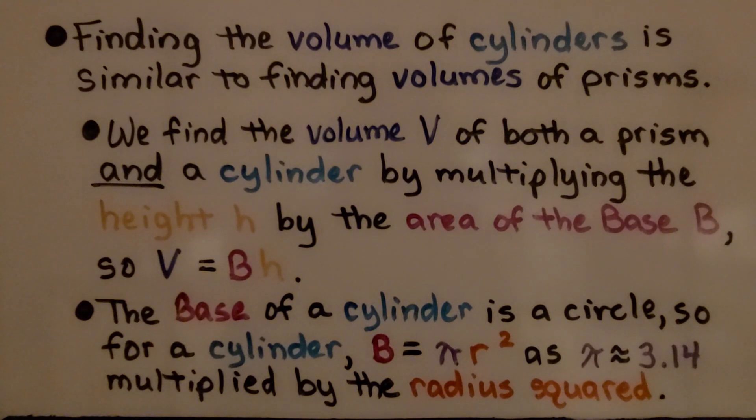Volume is equal to base times height. The base of a cylinder is a circle, so for a cylinder, the base is equal to pi r squared, as pi is approximately 3.14 multiplied by the radius squared.